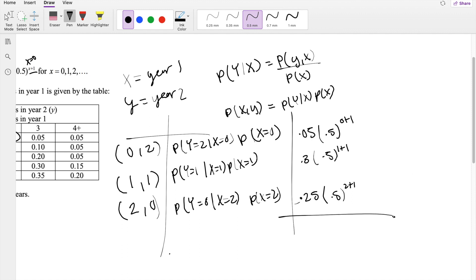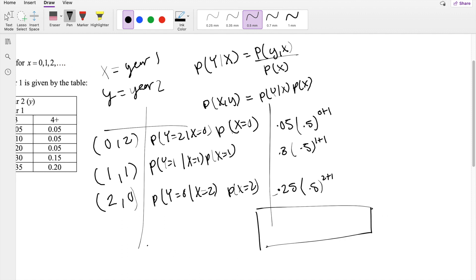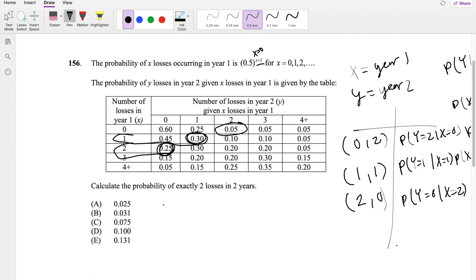The final probability is just adding all these up. So this equals 0.1325, which is our answer, E.